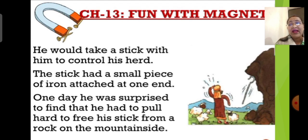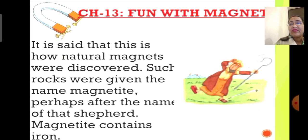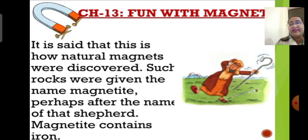His stick had a small piece of iron attached at one end. One day, while controlling his herd for grazing, his stick got stuck on a rock on the mountain side. It was very hard for him to pull the stick free from the rock. He was truly surprised and then realized the stick was being attracted to the rock because the rock was a natural magnet that attracted the iron tip of his stick.